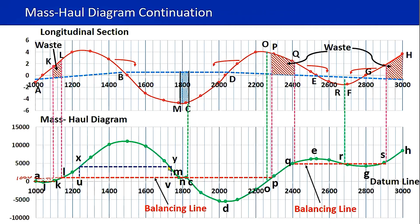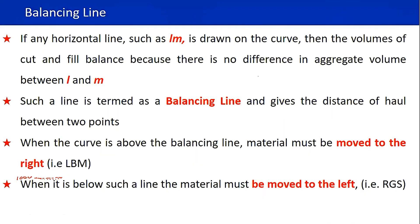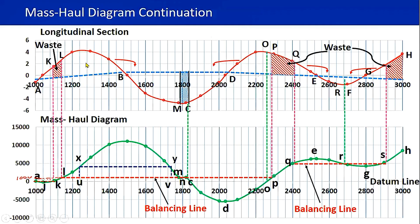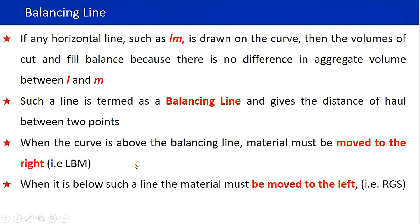The balancing line gives the distance of haul between two points. The distance you need to carry the volume from one point to the other — the haul distance — can be calculated from the centroid of the cut section to the centroid of the fill section. Alternatively, you can calculate the total distance: for example, from chainage 1100 where L is, to around 1700 where M is — that is the total haul distance for transporting the volume from the cut section to the fill section.